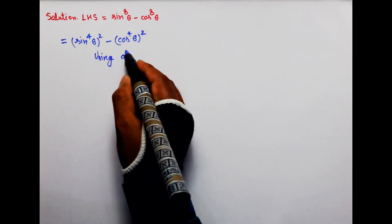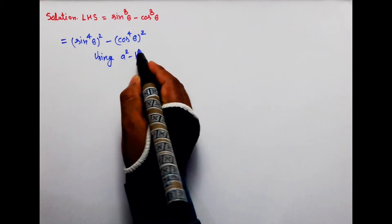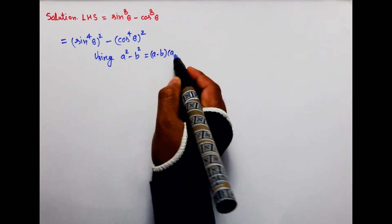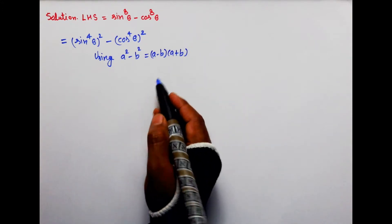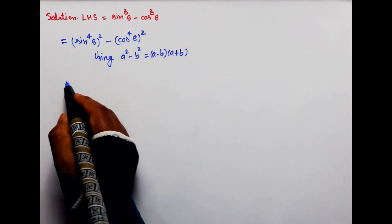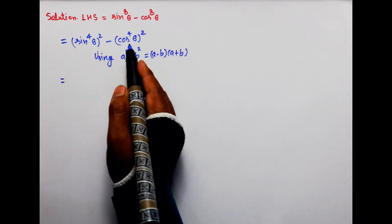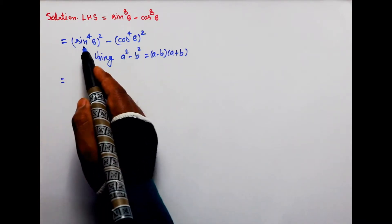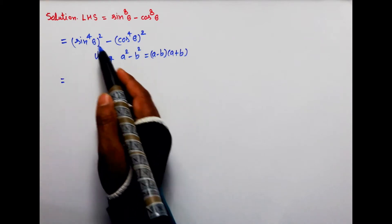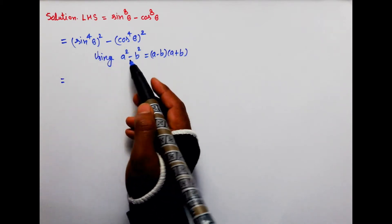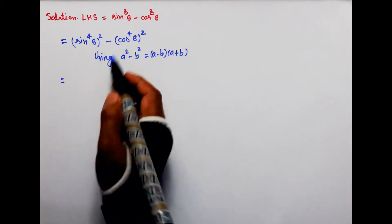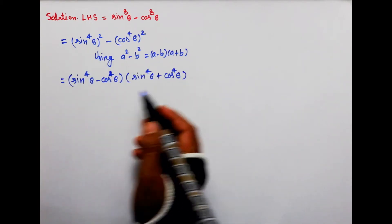Using a square minus b square = (a minus b)(a plus b), yeh formula use karenge. Toh ise aise likh paenge. Yahan a aur b pehchaanna padega: sin theta to the power 4 'a' hai, jabki cos theta to the power 4 'b' hai. Toh iske do factors aise likh paenge.